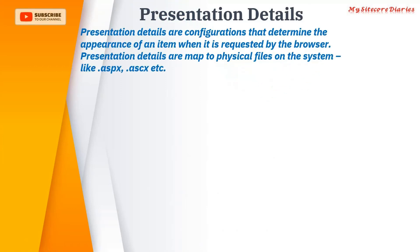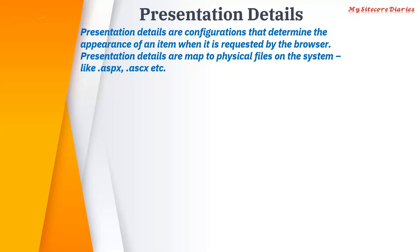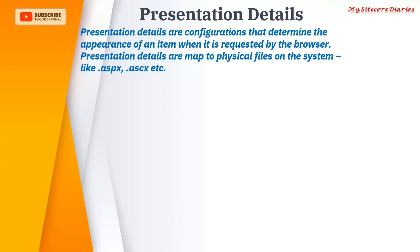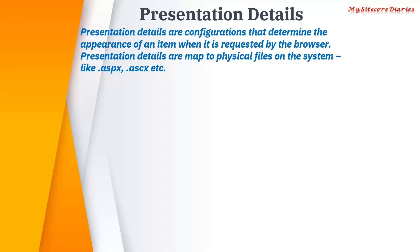Presentation details are configuration that determines the appearance of an item when it is requested by the browser. Presentation details are mapped to a physical file on the system, like an ASPX page. So presentation details is basically how your item should get displayed or how it should appear on the browser — it is the configuration which determines how the content is going to be displayed to the user.